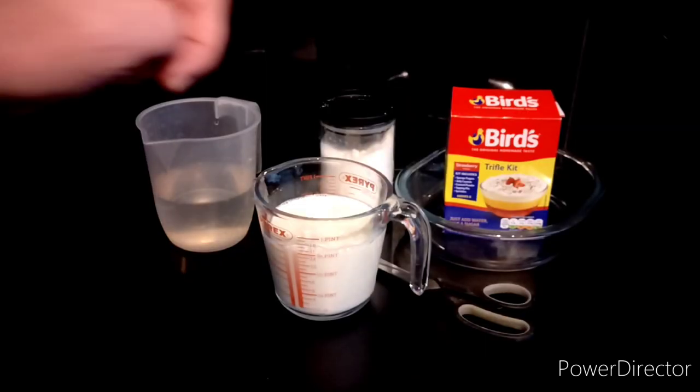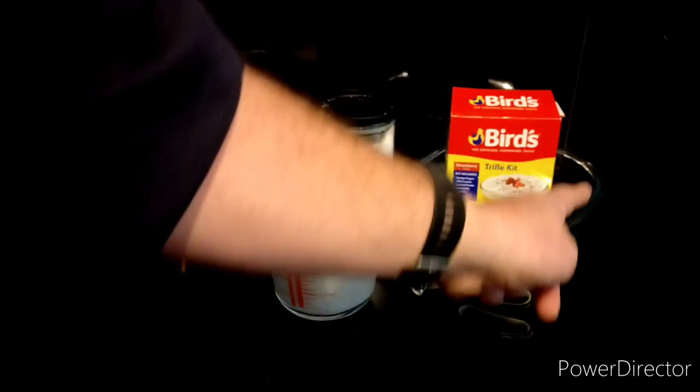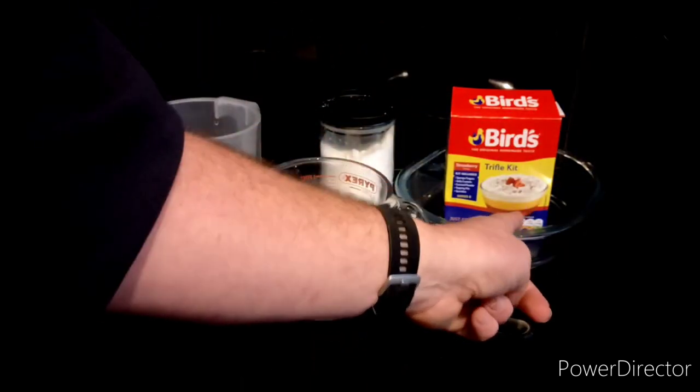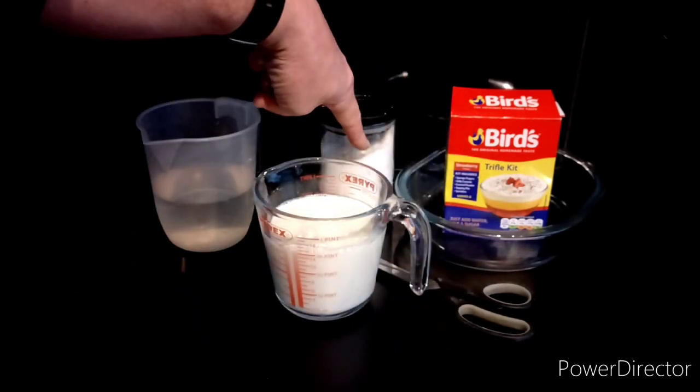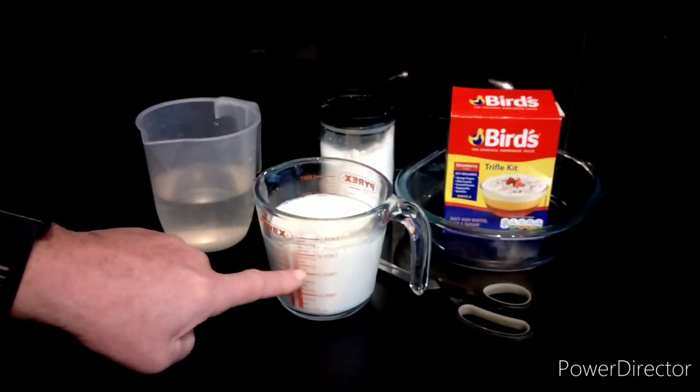Here we go, so everything we need: got my Bird's trifle kit, got me bowl - that's a pie dish because I haven't got a trifle bowl - got some scissors to open the sachets, got some sugar, 425ml of milk, 425ml of boiling water.